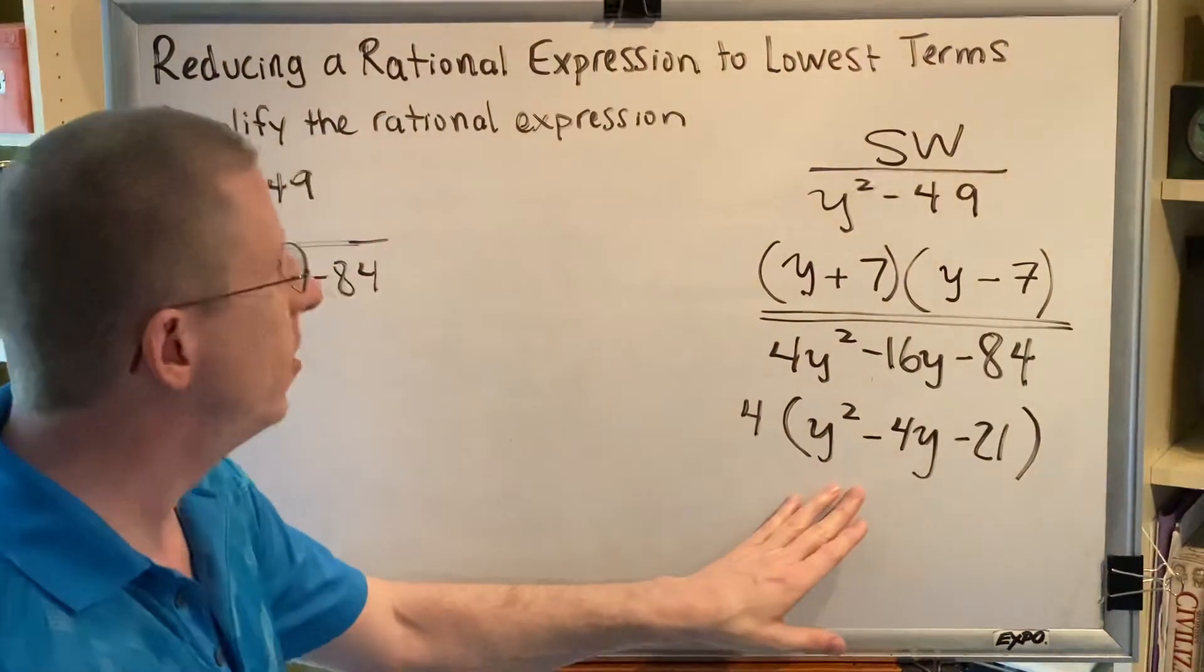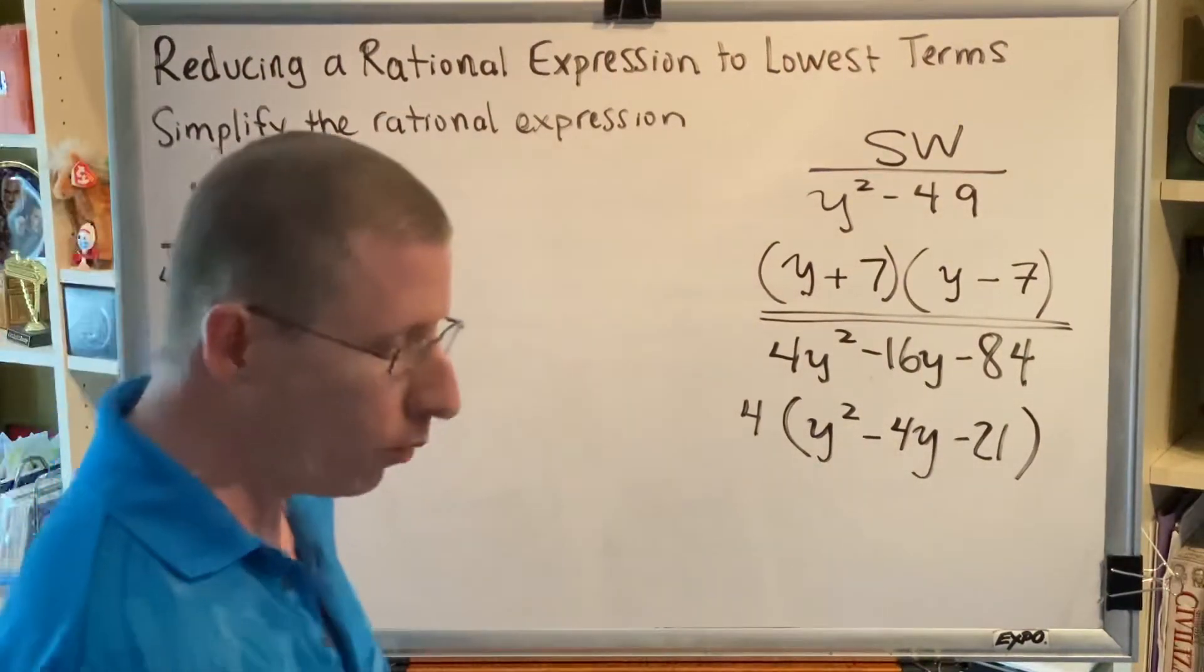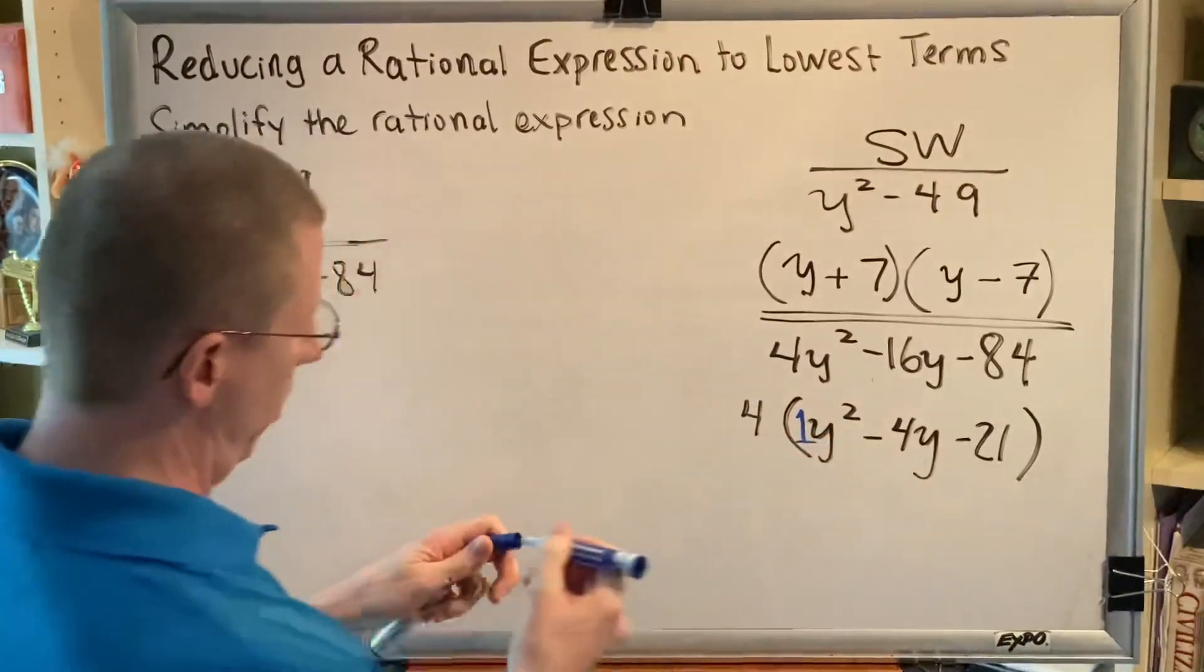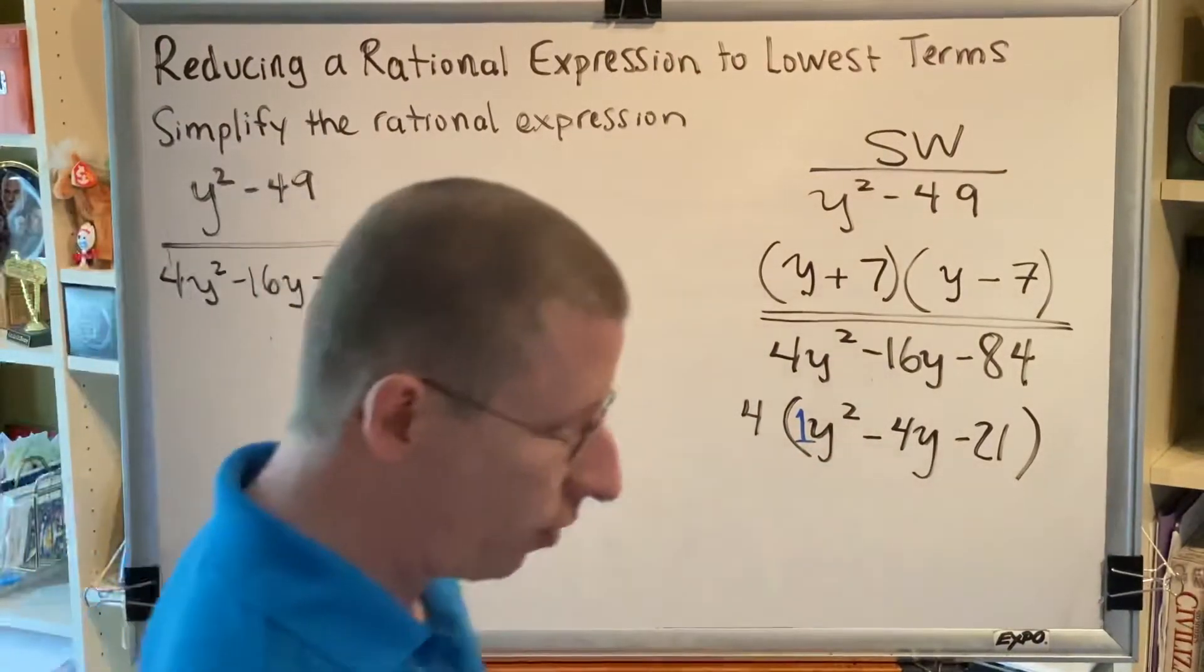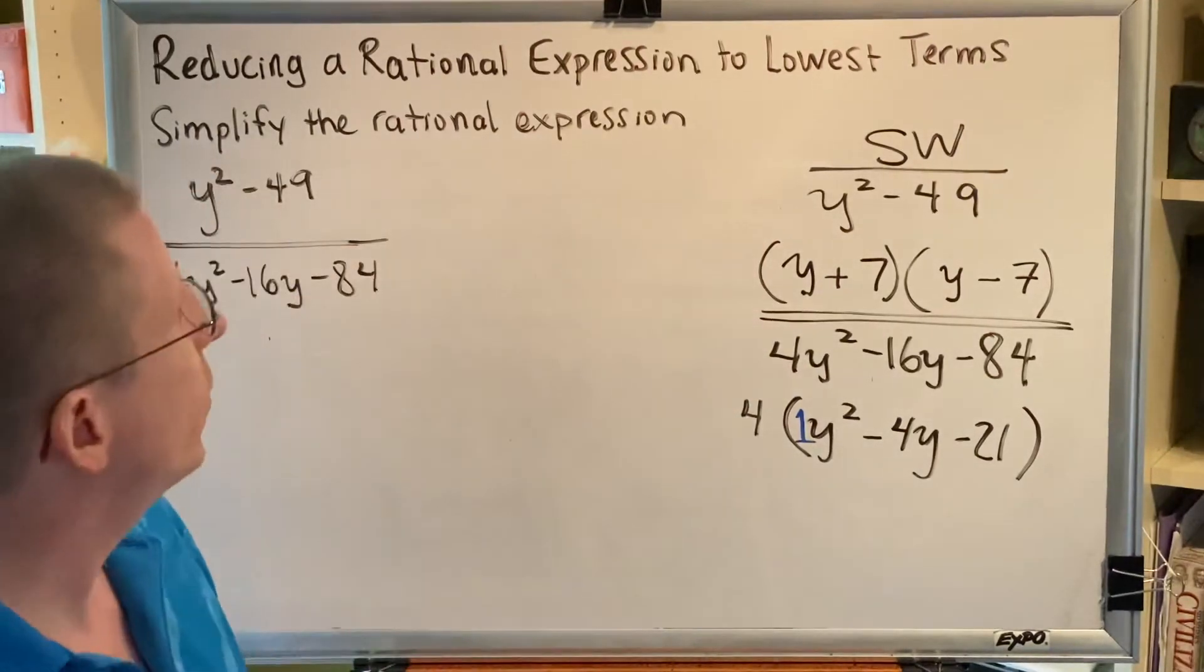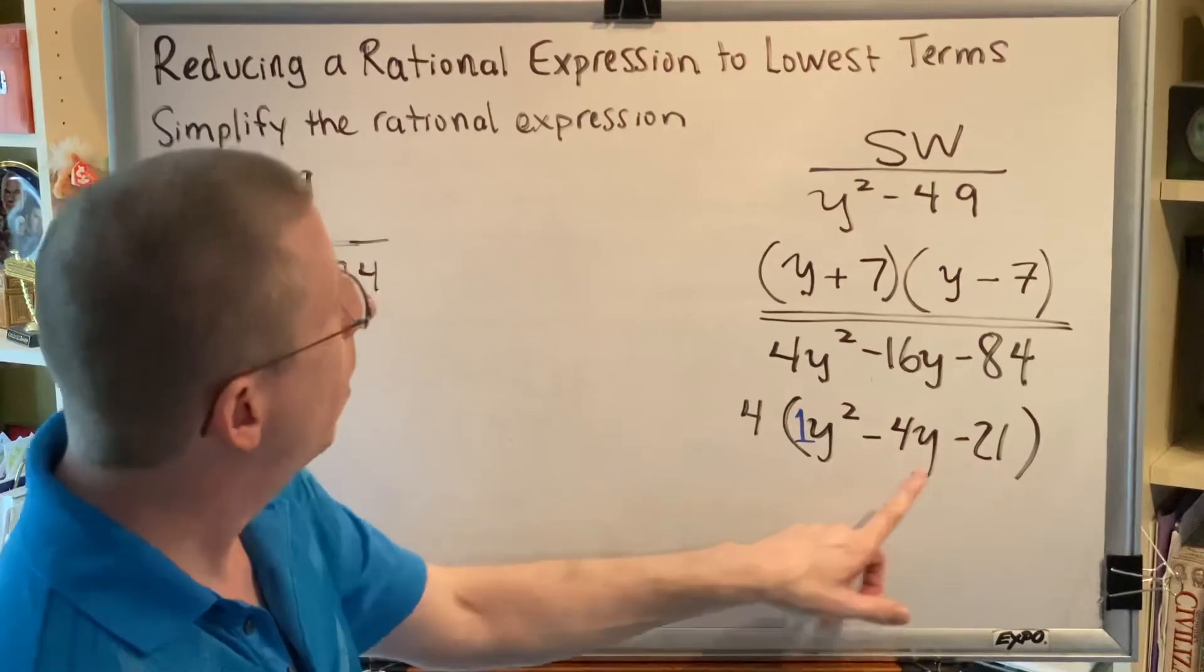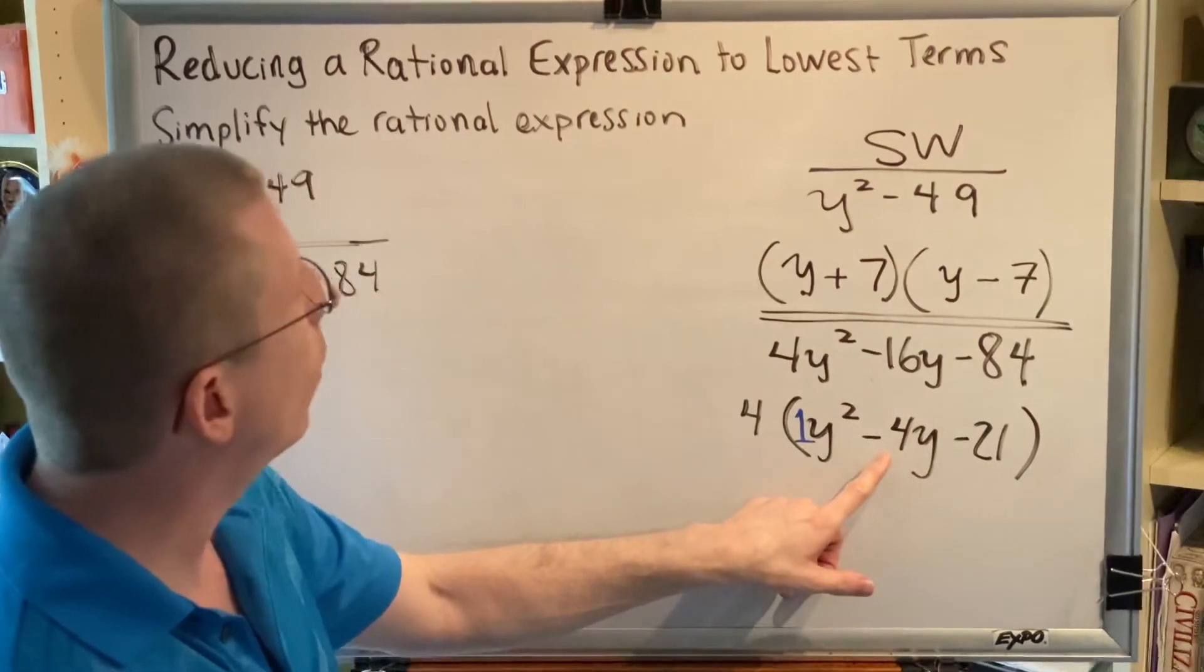So this happens to be a simple trinomial. And the reason why I say it's simple is because the variable squared term has a coefficient of 1. And when that's the case, factoring is actually pretty easy. You just have to come up with two numbers that multiply to make the end negative 21, but add to make the middle number negative 4.